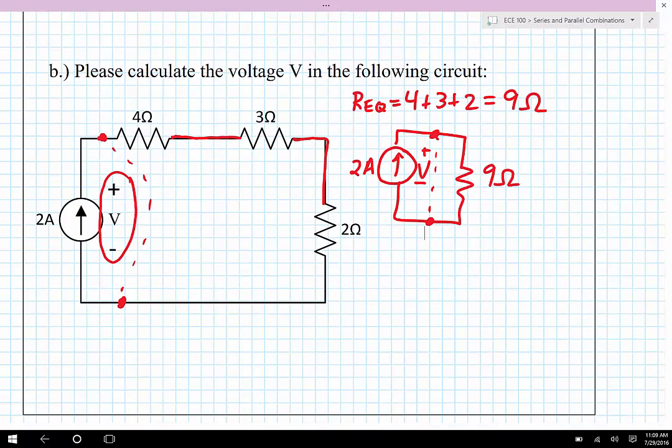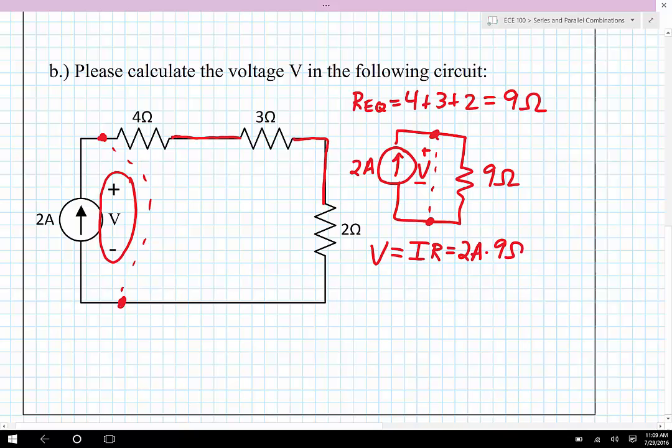Well, now again, it's just Ohm's law. The voltage, the unknown voltage is going to be the current times the resistance, which is going to be 2 amps times 9 ohms, which works out to be 18 volts.